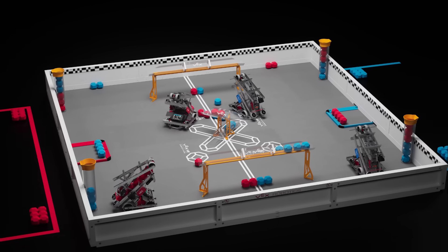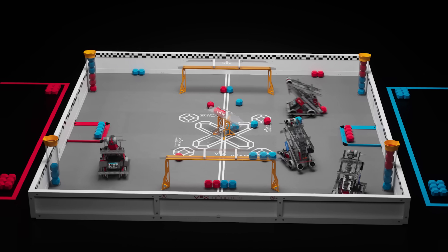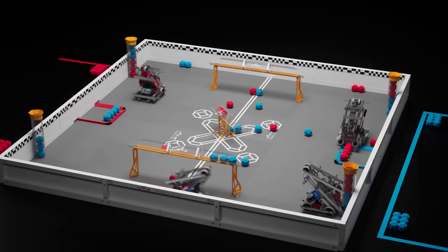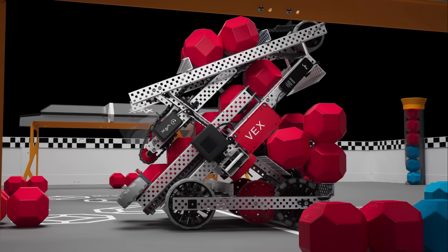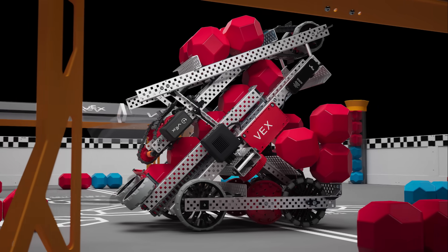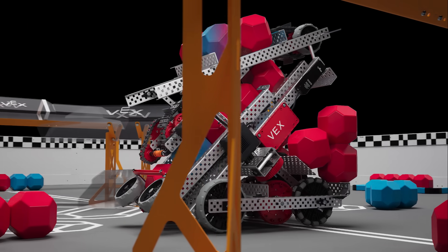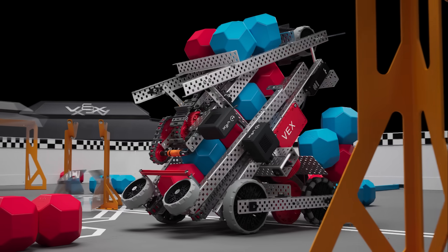The one-minute, 45-second driver control period begins once the autonomous bonus winner has been determined. In Pushback, there are no possession limits. Robots are free to possess as many blocks as they please of either color.